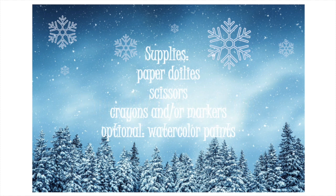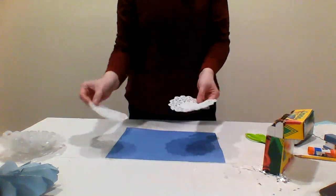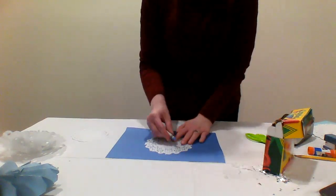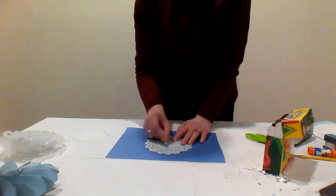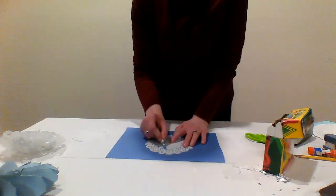You'll need some paper doilies in various sizes, scissors, crayons and or markers. And if you have them, some washable watercolor paints work well too. Pick some wintry, cool, icy colors to fill in the center of the paper doily. Try blending some colors like purple and blue.